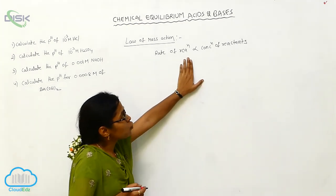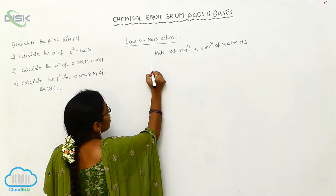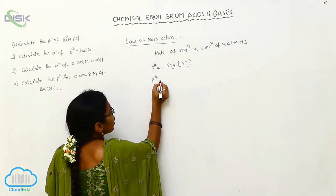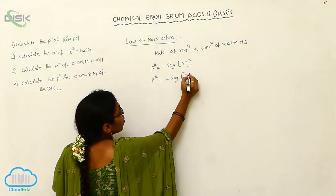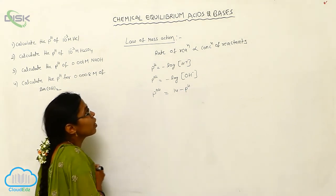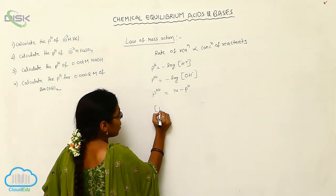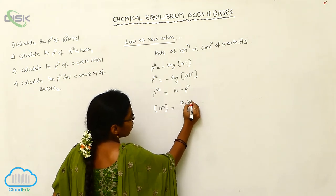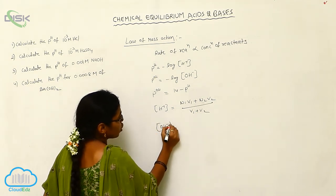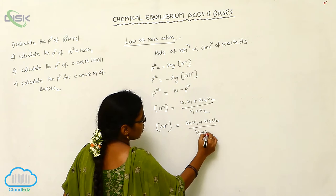The rate of reaction is always directly proportional to the concentration of reactants. Based upon this, the formulas for these problems are: pH = −log[H⁺]; pOH = −log[OH⁻]; and pOH can also be calculated as 14 − pH. Whenever we are using normalities, the concentration of H⁺ is equal to (N₁V₁ + N₂V₂) / (V₁ + V₂), and similarly the concentration of OH⁻ = (N₁V₁ + N₂V₂) / (V₁ + V₂).